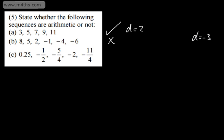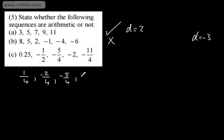The next sequence: 0.25, negative 1 half, negative 5 over 4, negative 2, negative 11 over 4. Writing these all in quarters: 1/4, negative 2/4, negative 5/4, negative 8/4, negative 11/4. We can see this is arithmetic — yes it is — and the common difference is negative 3 over 4.